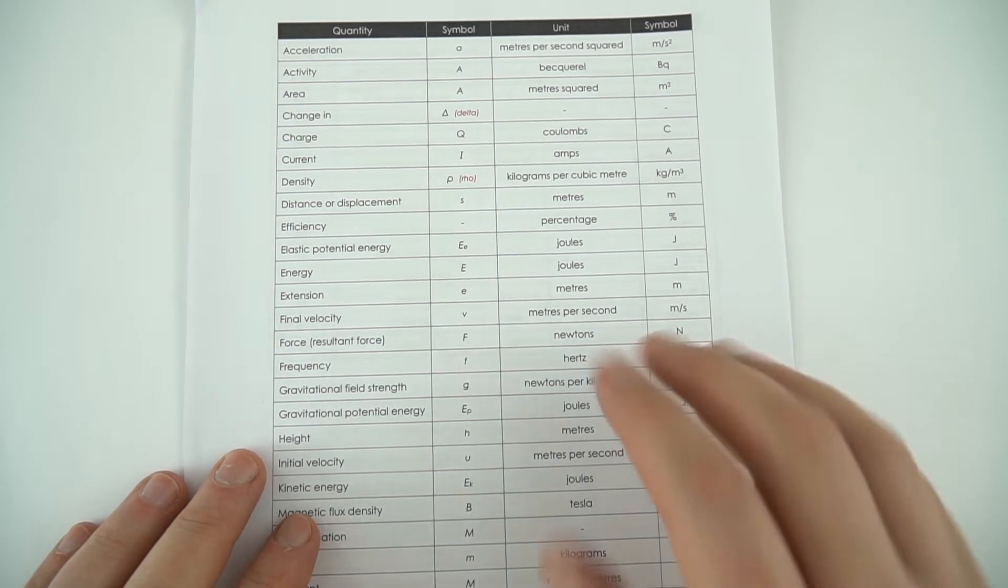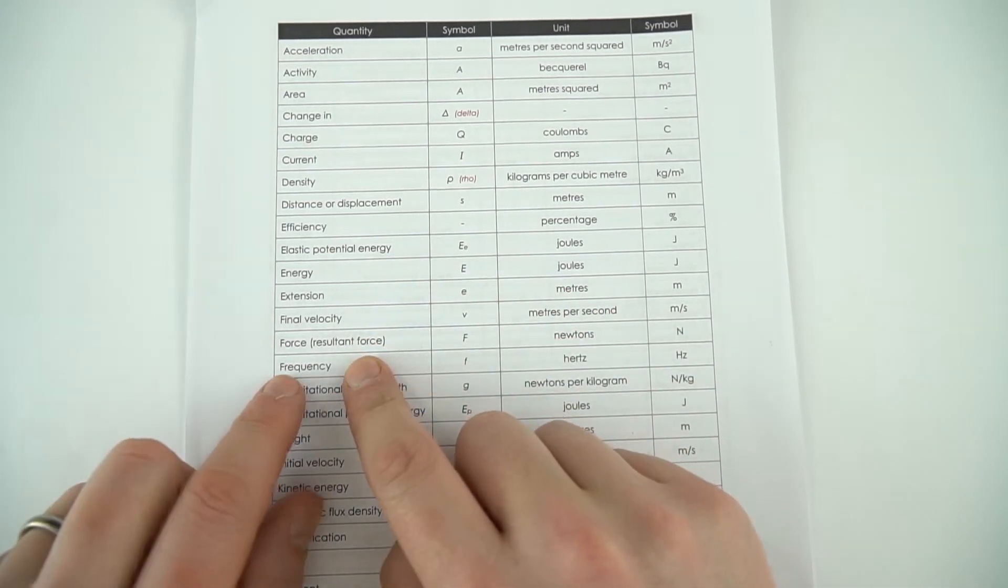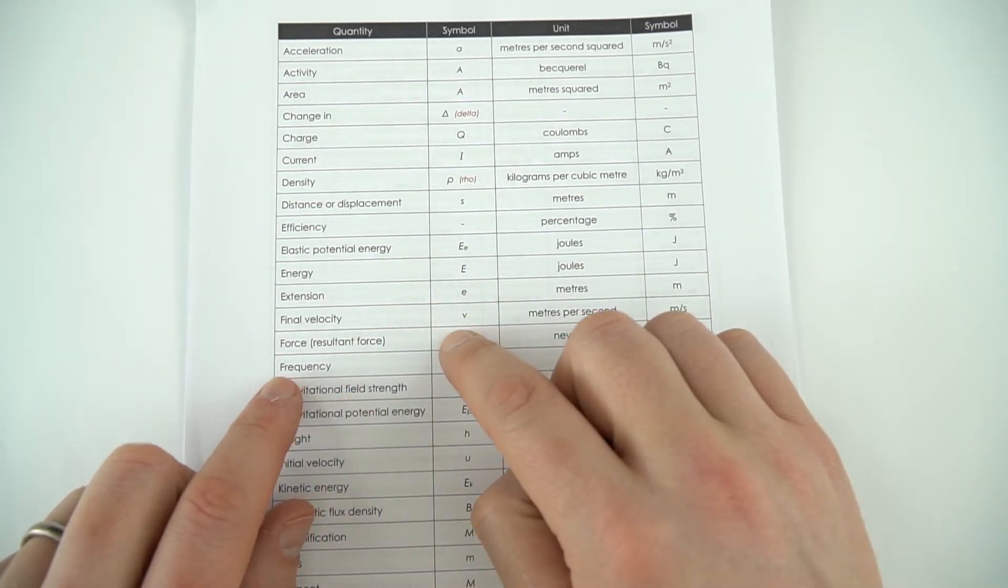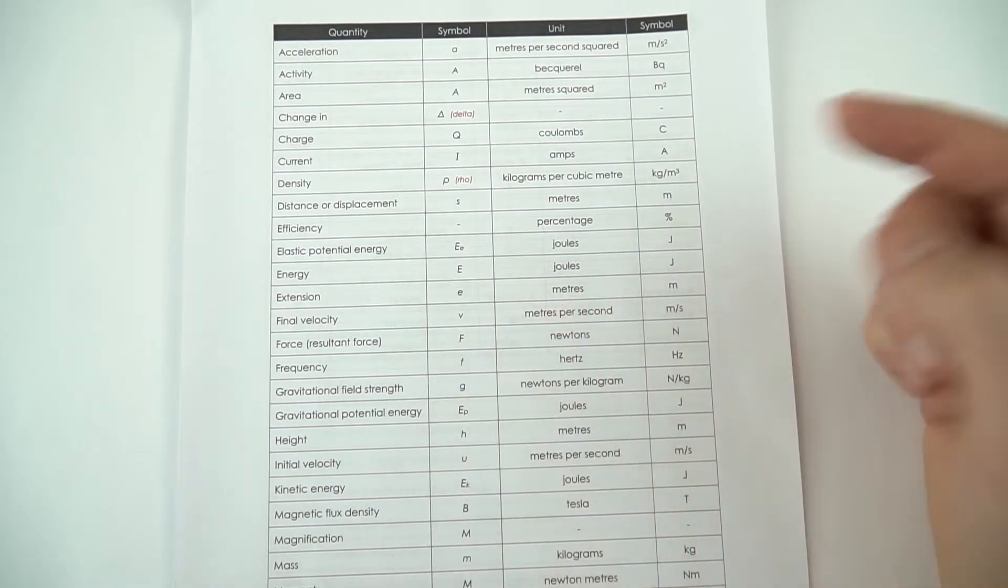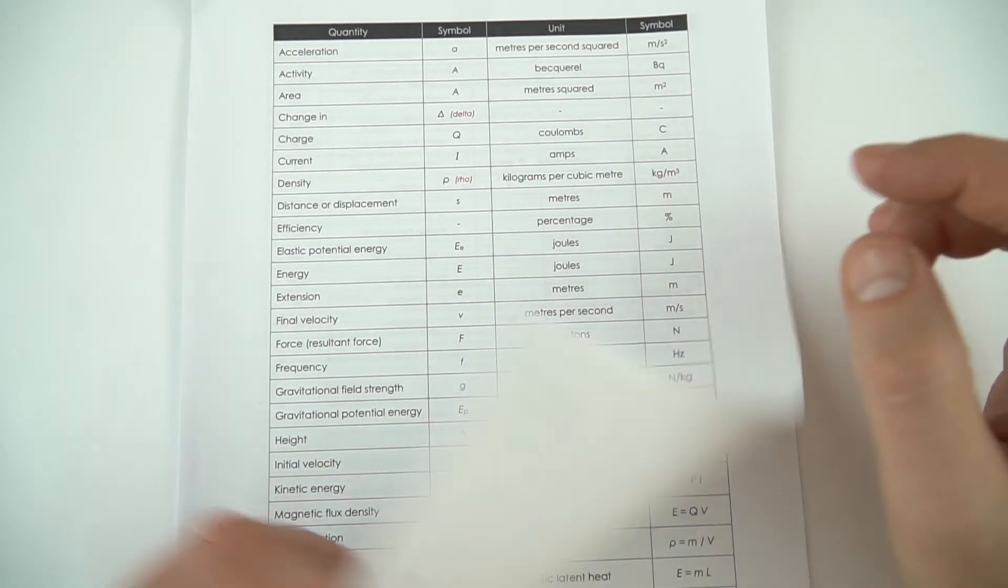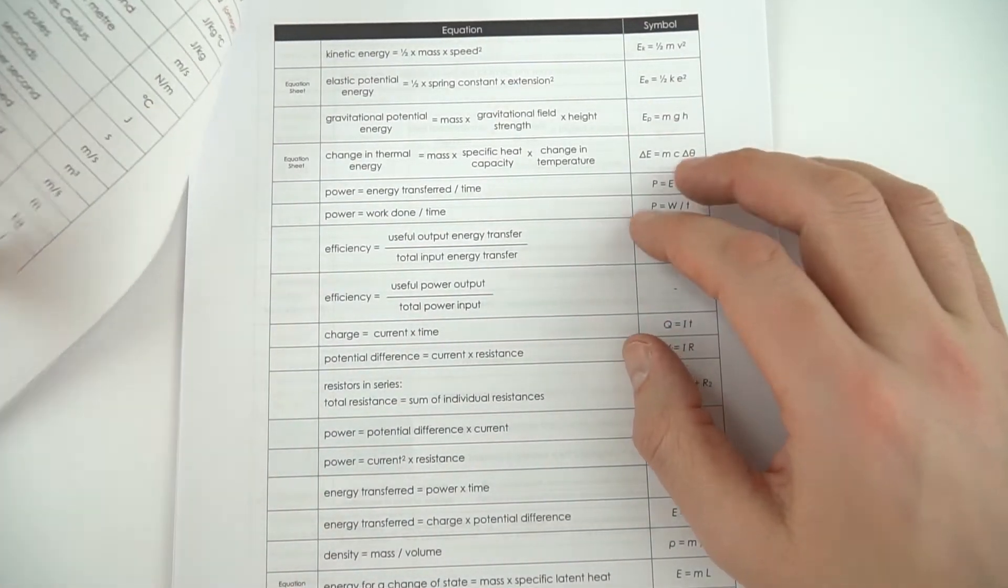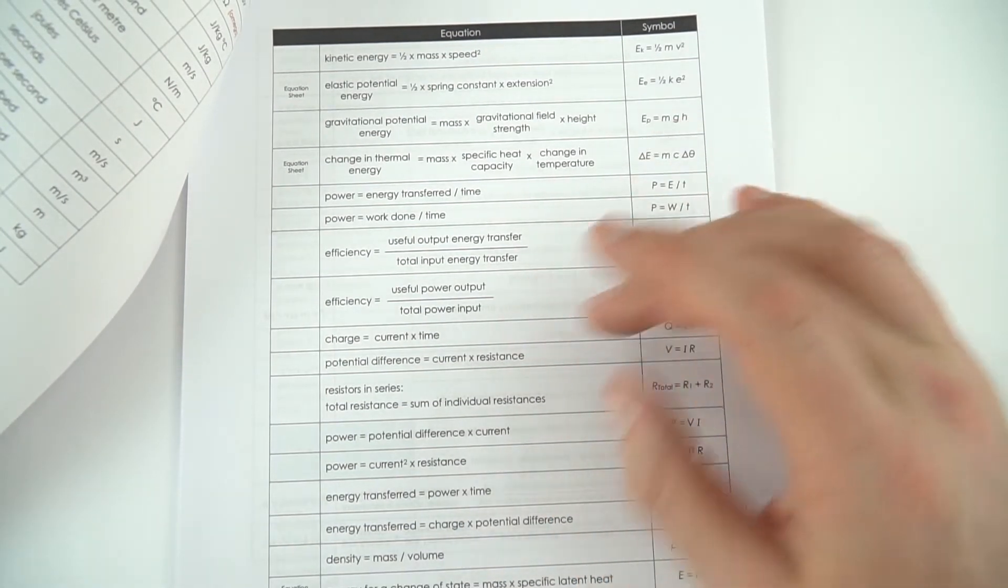For GCSE Physics, there are a huge amount of different quantities, shorthand ways of writing them, different units we use to measure things, and you've got to remember how all of these are linked together with different equations.